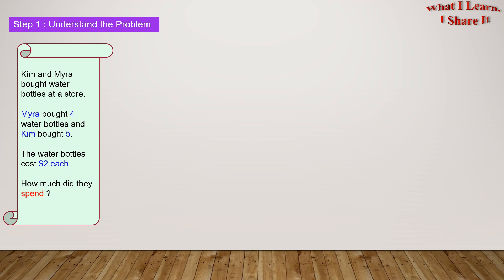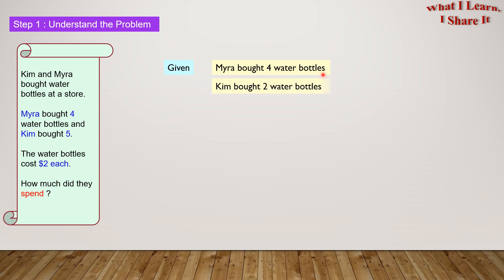Step one: Understand the problem. So what are we given? We are given that Myra bought four water bottles and Kim bought five. The water bottles cost two dollars each. So in our own words we can write: Myra bought four water bottles, Kim bought five water bottles, and the cost of each water bottle is two dollars.